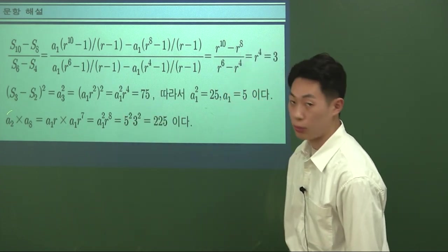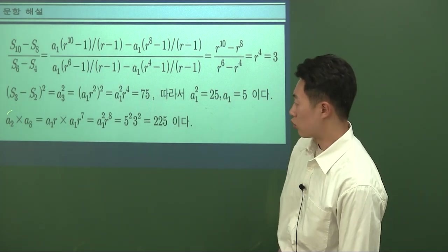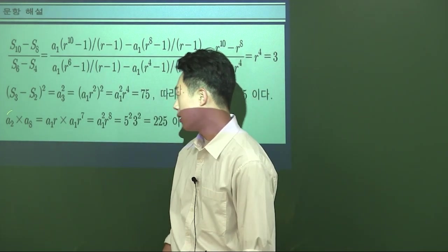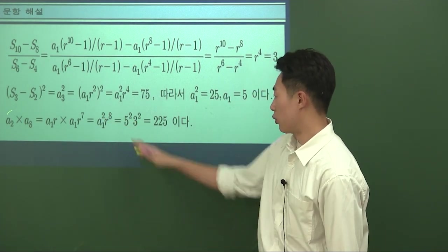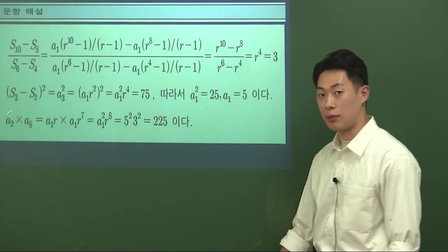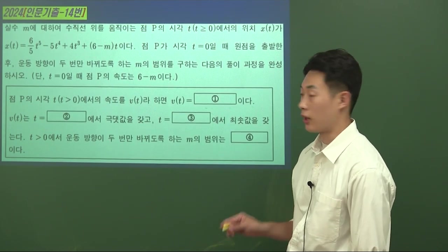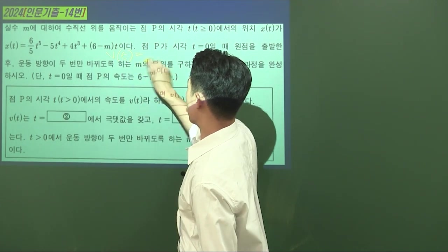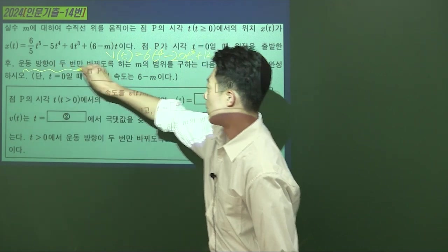답안에서 3개의 값을 정상적으로 잘 구했는지 확인하시면 됩니다. 11번을 보겠습니다. 코사인과 사인이 나와 있는데, 코사인을 사인으로 변환하고 사인의 각도 변환 공식을 쓰면 됩니다. 각을 변환했을 때 앞에 마이너스가 붙는 형식으로 나오게 됩니다.